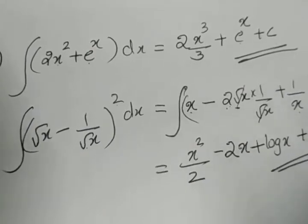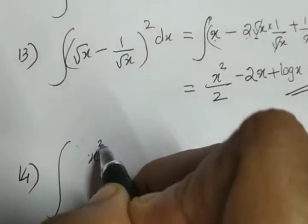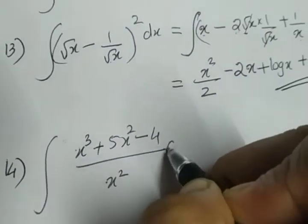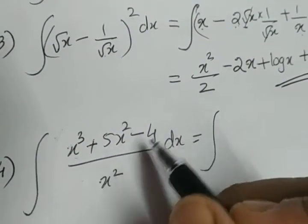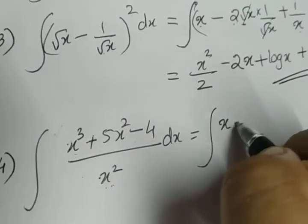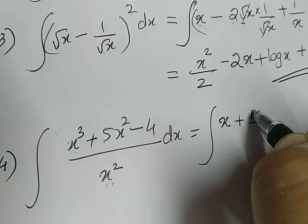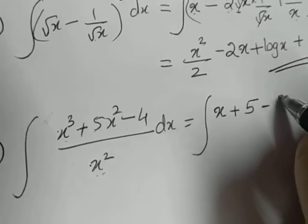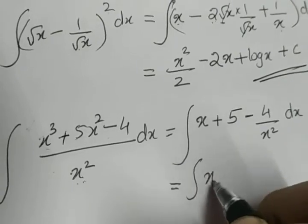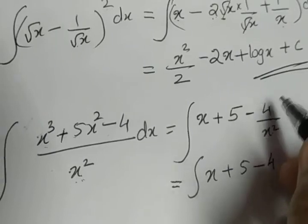Next question: integral of (x³ + 5x² - 4)/x² dx. We divide each term separately by x². The first term is x³/x² = x. The second term is 5x²/x² = 5. The last term is -4/x².